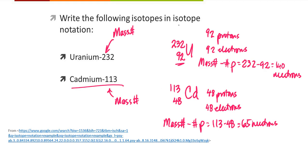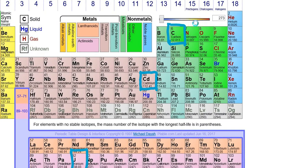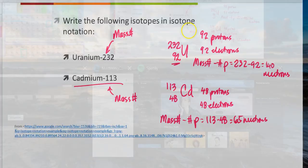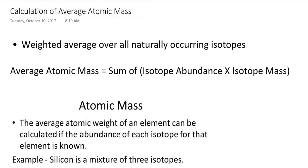We can also use isotope information to calculate the average atomic mass for each element in the periodic table. If we consult the periodic table, atomic masses are given underneath the element names as decimal values — they're hardly ever whole numbers. The reason they're decimal values is because the average atomic mass is a weighted average. That means we add up the product of each isotope's abundance multiplied by its mass in individual terms.